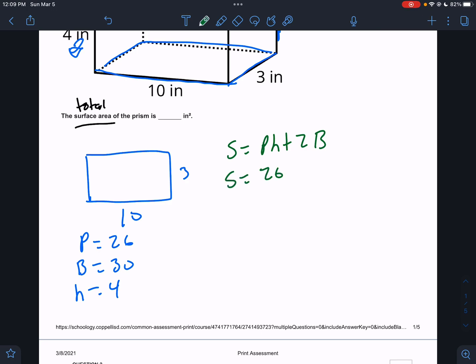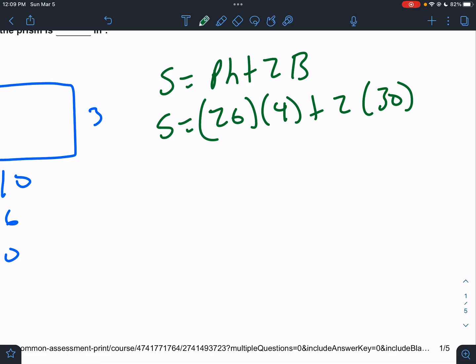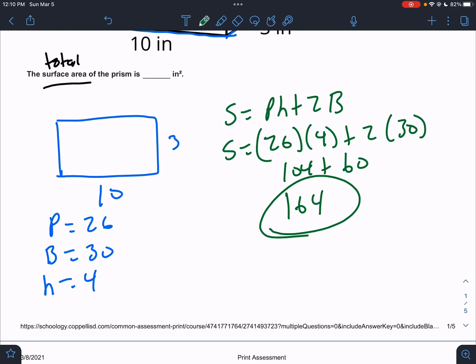The perimeter of the base is 26. The height is 4. And then two bases coming in at 30 each. So that would be 80 plus 24. That would be 104 plus 60. This would be 164. And that's the answer to the first one.